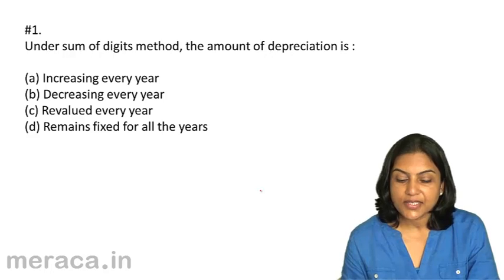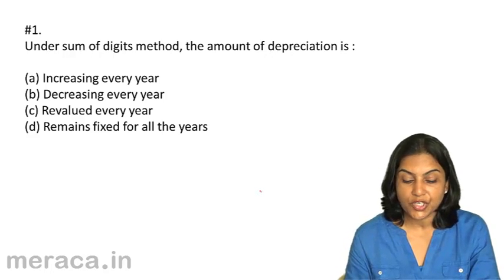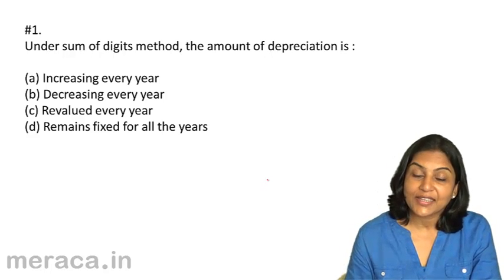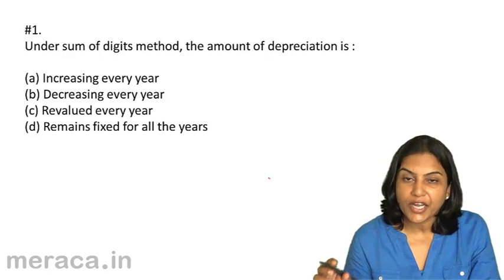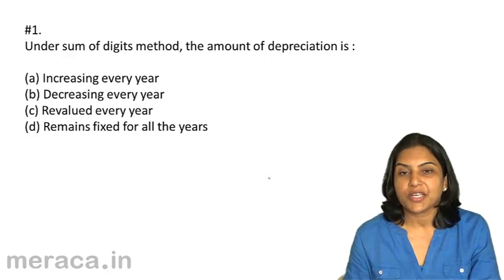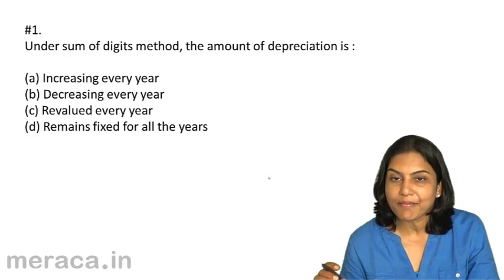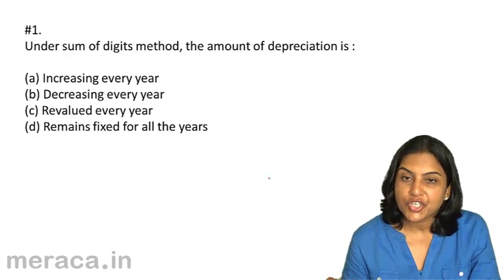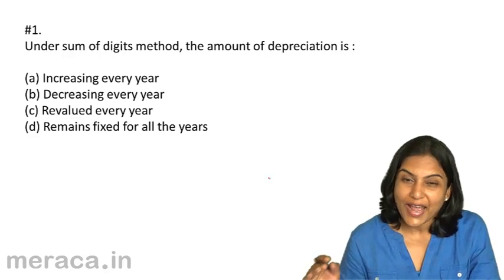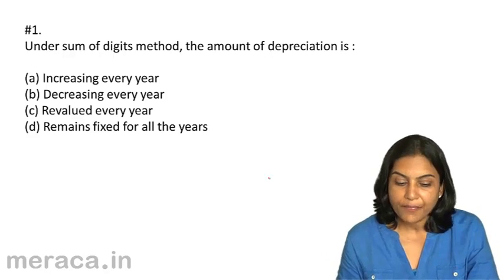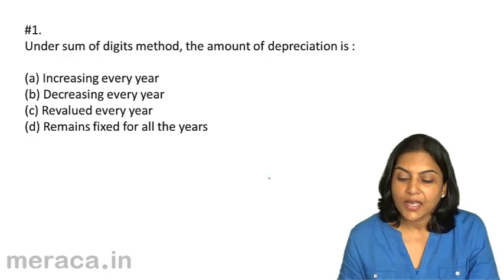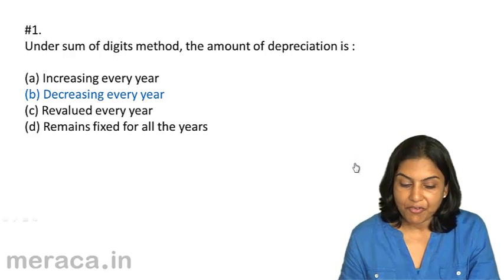The correct answer: under the sum of digits method, the amount of depreciation decreases every year because we take the remaining depreciable amount multiplied by the remaining life of the asset, divided by the sum of the year's digits. The denominator remains constant, but the numerator decreases as the asset grows older. Therefore, under the sum of digits method, which is a variation of the reducing balance method, the amount of depreciation decreases every year.